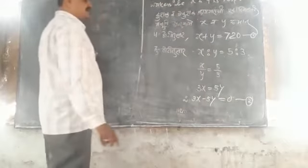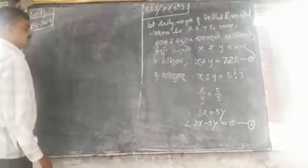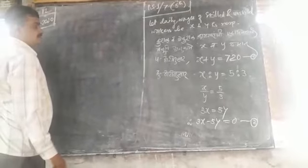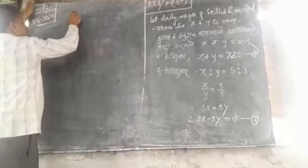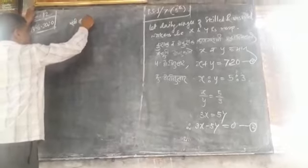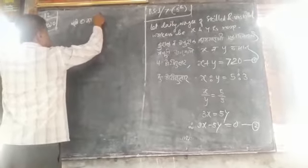3X is equal to 5Y, so 3X minus 5Y is equal to 0.